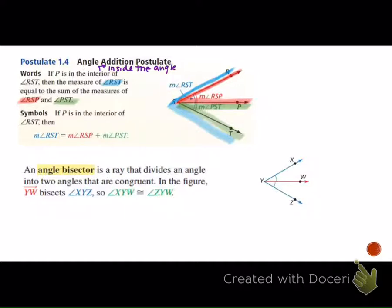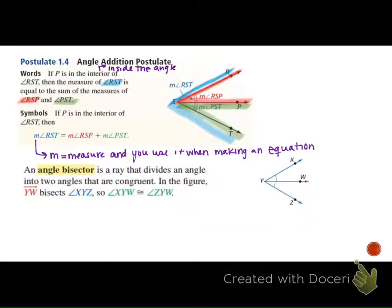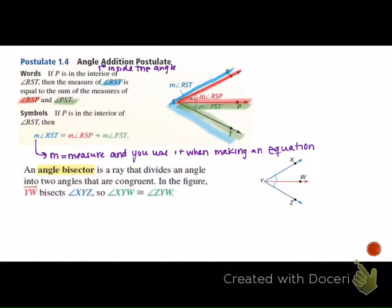The measure of angle RST equals the measure of angle RSP plus the measure of angle PST. Notice this M here. This means measure. You use the M only when you are writing equations. You don't use that in any other situation when it comes to congruence.